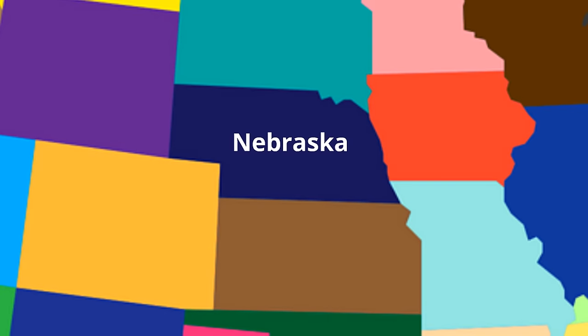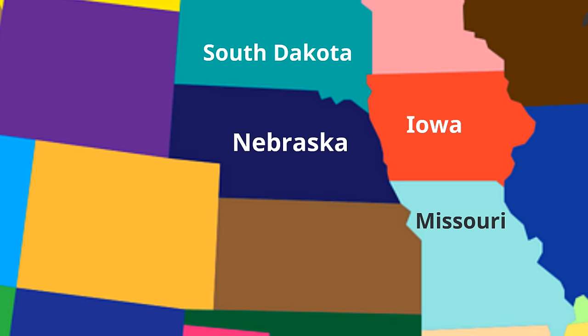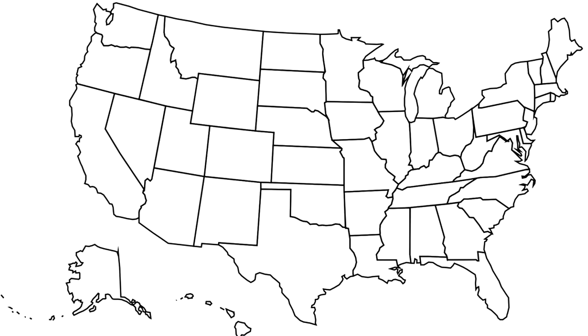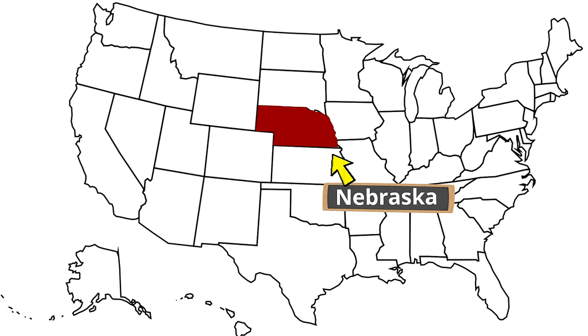Now we're gonna learn who Nebraska's neighbors are — the states that border Nebraska. Bordering Nebraska to the north is the state of South Dakota. Then there are two states that border Nebraska to the east: Iowa and Missouri. Bordering Nebraska to the south are Kansas and Colorado. Finally, bordering Nebraska to the west is the state of Wyoming. In all, six states border Nebraska.